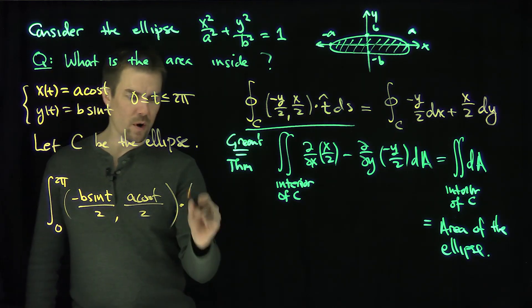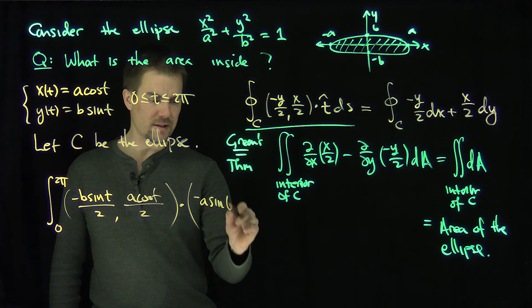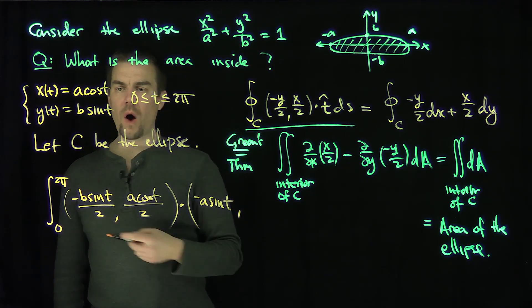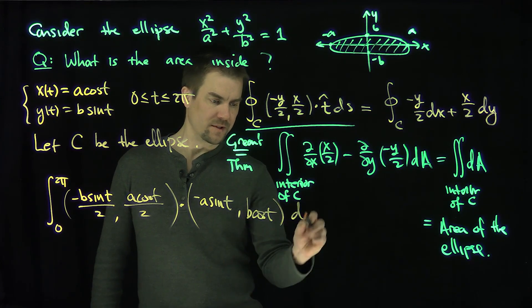I'm going to dot that with the derivative of this curve. So the derivative of x is going to be negative a sine t, negative a sine t. The derivative of y is going to be b cosine t dt.